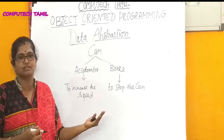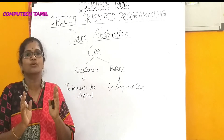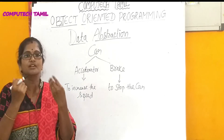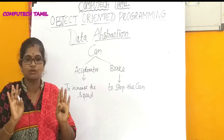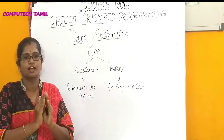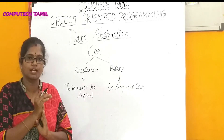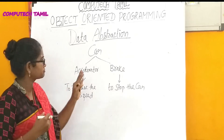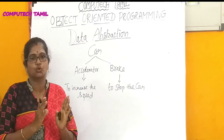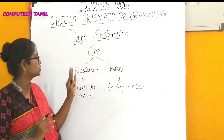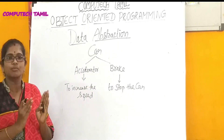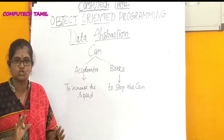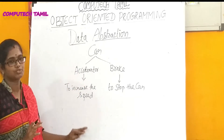This is abstraction — data abstraction. What we see from the outside world is the essential information. In a class, we have data members and member functions. The essential information visible to the outside world is data abstraction.